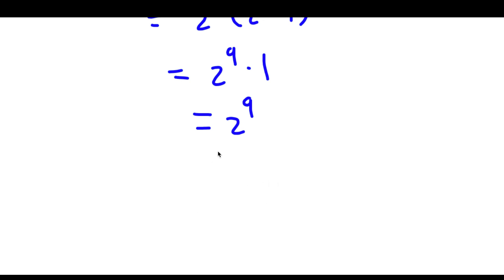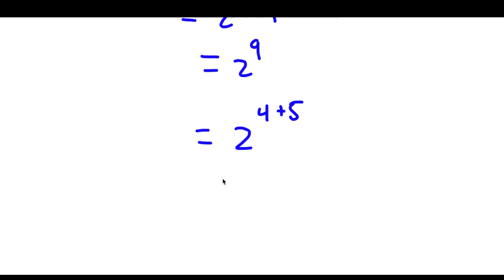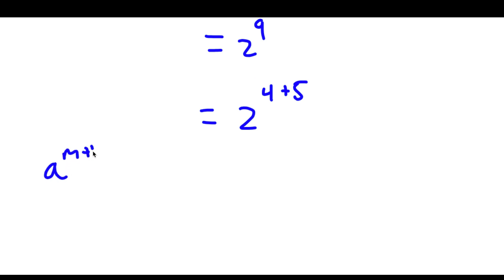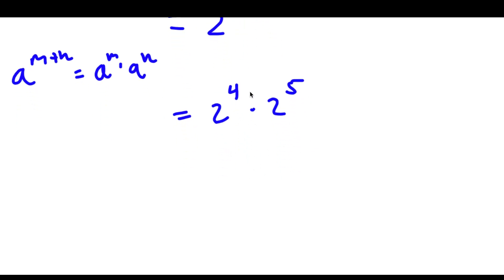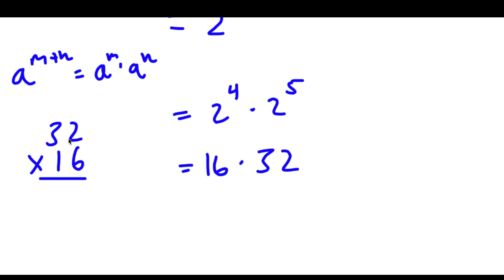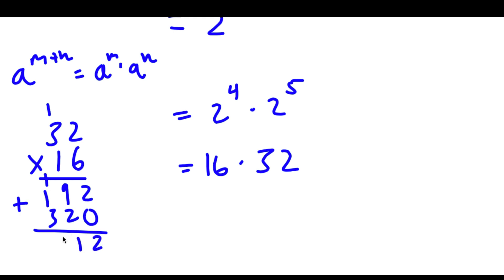Now we can go ahead and simplify this. 2 to the power of 9 is the same thing as 2 to the power of 4 plus 5. And if we have something in the form a to the power of m plus n, this is equal to a to the power of m times a to the power of n. So 2 to the power of 4 plus 5 equals 2 to the power of 4 times 2 to the power of 5. Now 2 to the power of 4 is 16 and 2 to the power of 5 is 32. So I have 16 times 32. 32 times 16: 2 times 6 is 12, 6 times 3 is 18, 18 plus 1 is 19, 1 times 2 is 2, 1 times 3 is 3. Adding these together gives 512. So 512 is our answer.